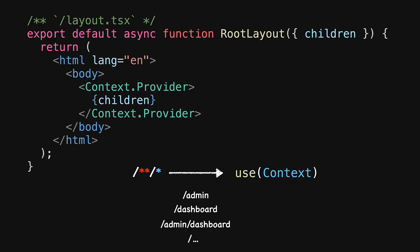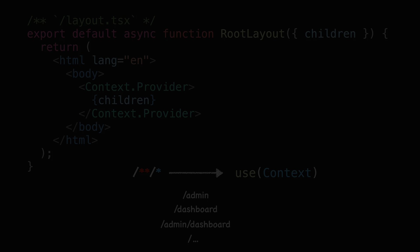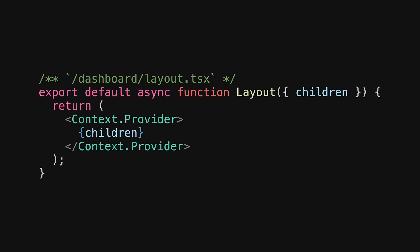But what if we want a global store only for a specific portion of our website — for example, only within slash dashboard? Well, instead of using the context within the global layout, we can create a new layout for a specific sub route. For example, we can create a layout under the dashboard folder and use the context within that. This context is going to be specific only for routes that exist within slash dashboard.